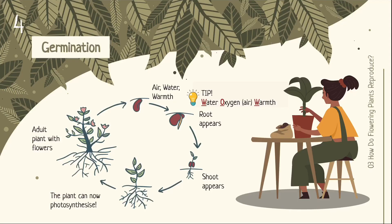Seeds may not immediately germinate upon formation — they only start to germinate once conditions are favourable. This happens when the seed is still alive, has sufficient air or oxygen, water, and warmth. A seed does not require light to germinate; it can germinate even in the dark. When a root grows out of a seed, it means the seed has germinated. After germination, it continues to grow into a young plant, with roots appearing first to absorb water and provide support, followed by the shoot. When a young plant develops leaves, it can photosynthesise and produce its own food.